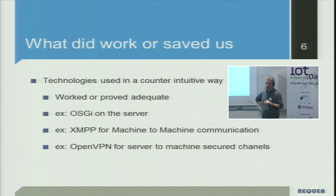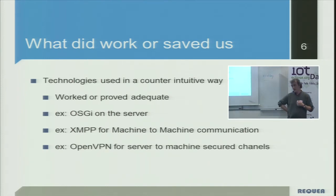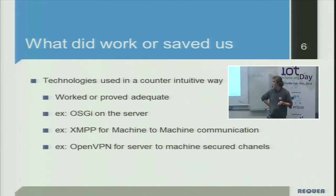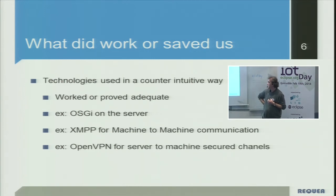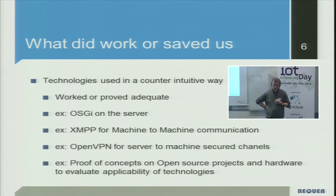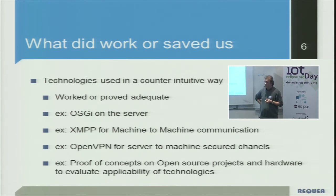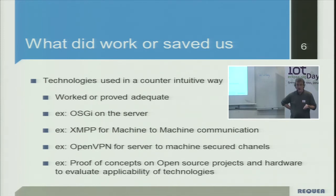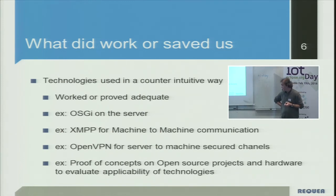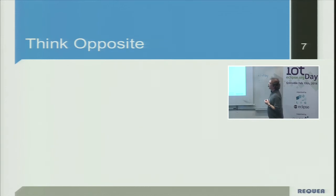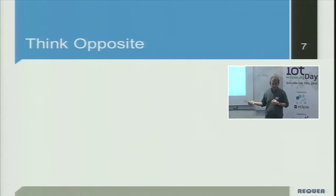OpenVPN for server-to-machine secure channels — OpenVPN was designed for point-to-point or client-to-server secure channel communication, not for server-to-machine. And of course, using open source projects to qualify usage and technologies, including open source hardware, to make sure we could use packages and evaluate technologies. So it's almost the opposite: proven technology didn't work, whereas unproven, counter-intuitive approaches did work.